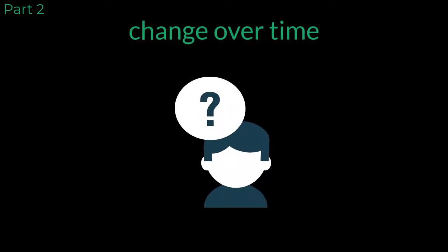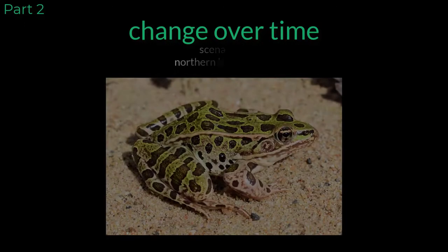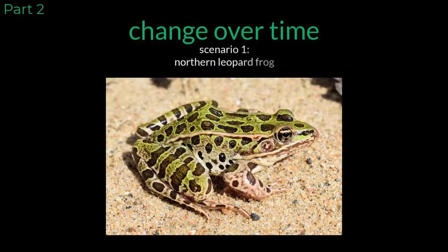Saying that organisms change over time to evolve can be a bit misleading depending on your interpretation. For example, this northern leopard frog, a species commonly found in Illinois, goes through many changes over its lifetime.